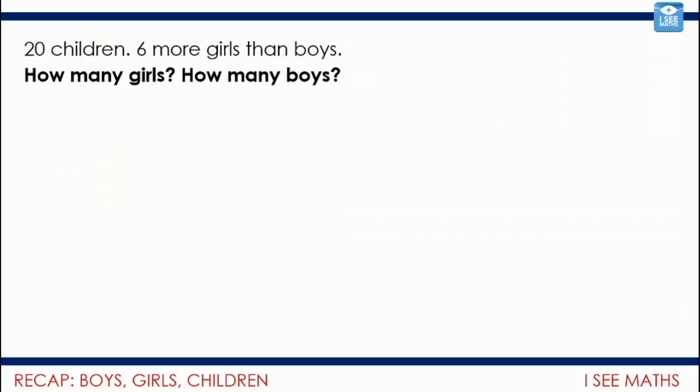Now what we're going to do is extend our understanding of this structure of problem and see how lots of different worded maths problems follow this structure. So we looked at this example: 20 children, 6 more girls than boys. How many girls? How many boys? So more girls than boys, 6 more girls than boys. That must leave 14 children. Seven more girls and seven more boys. So in total how many girls? Thirteen. How many boys? Seven.